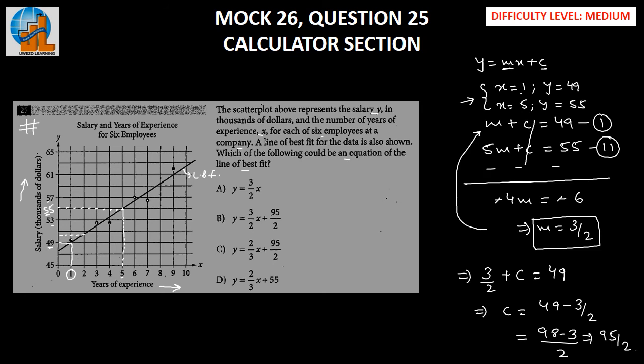We have found the value of M and the value of C, which implies our final equation should look like Y equals 3 by 2 X plus 95 by 2. Let's go through our options. Option B is the correct answer.